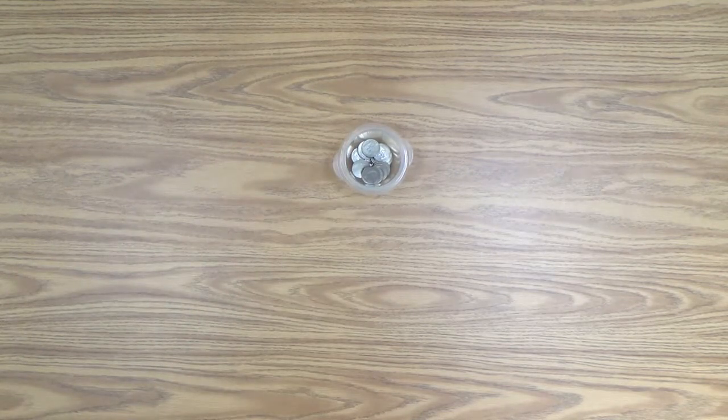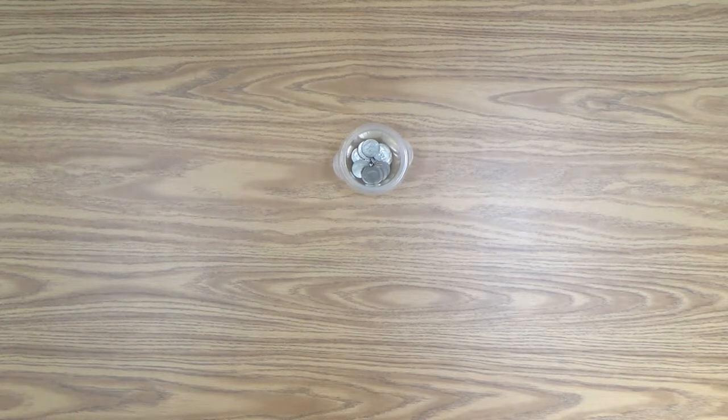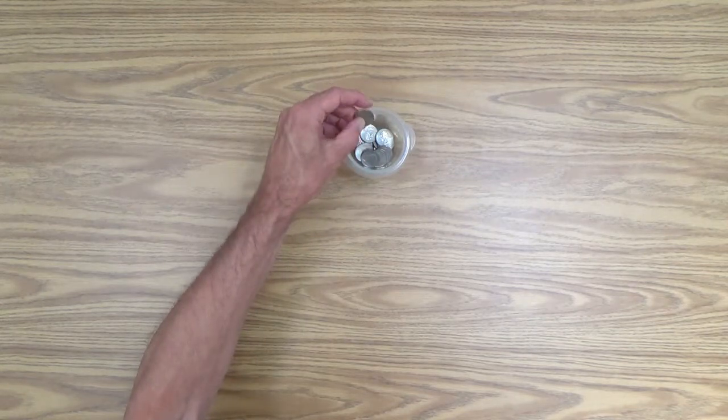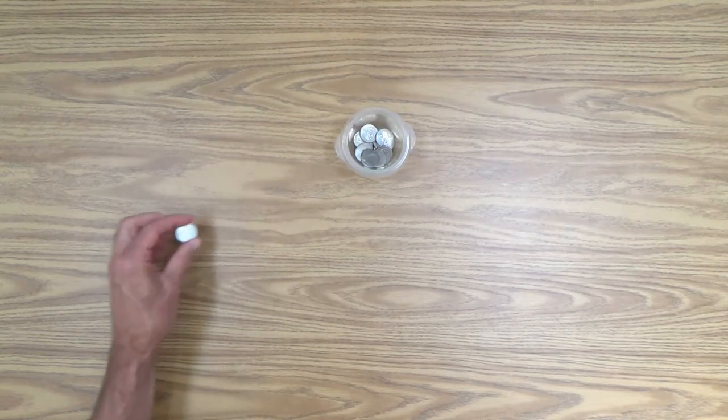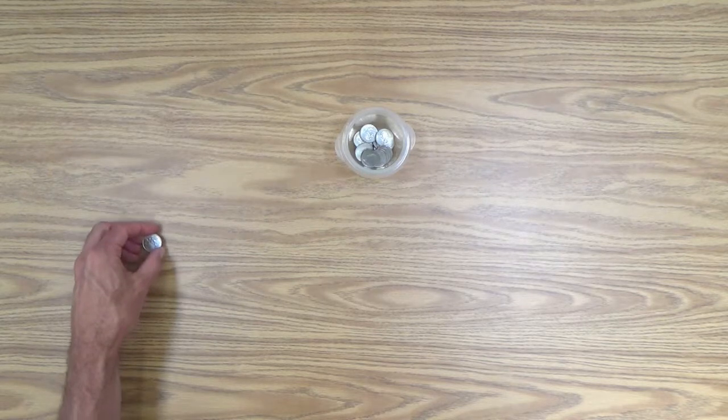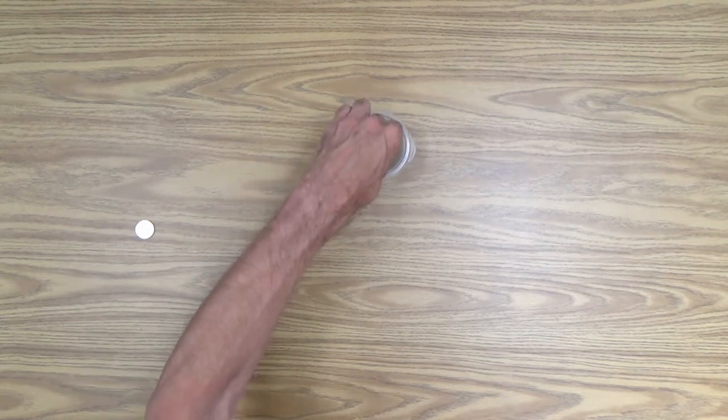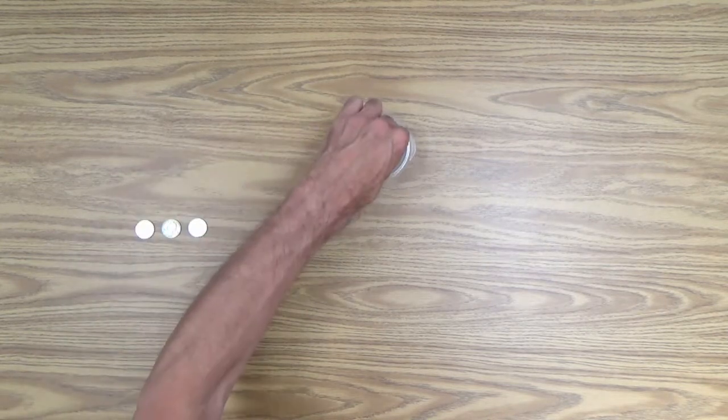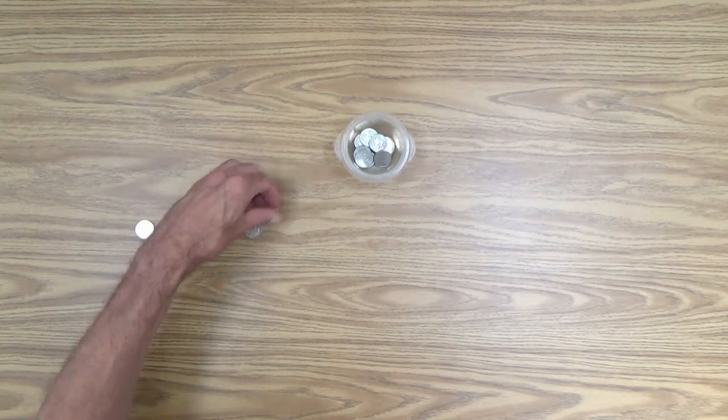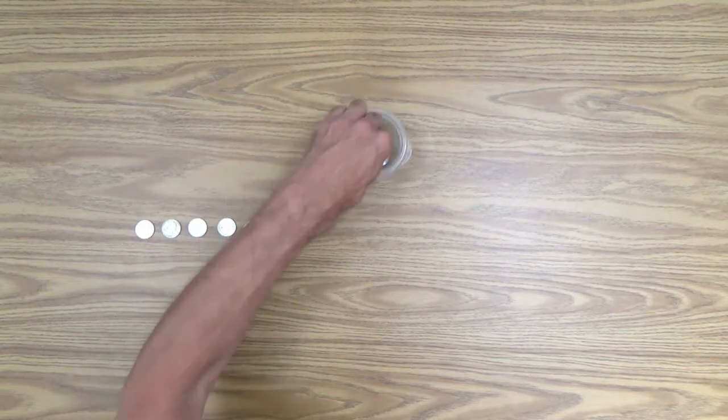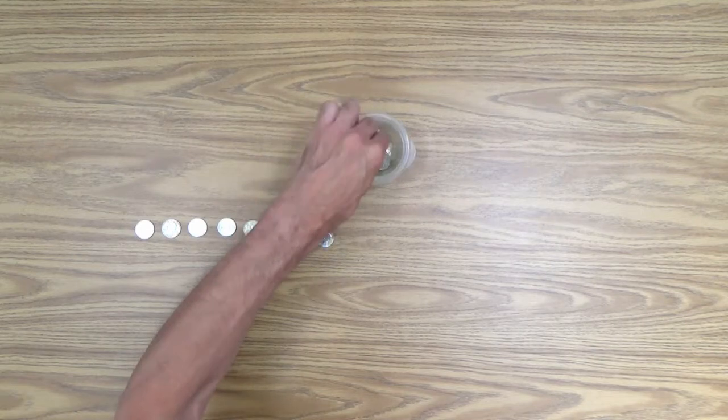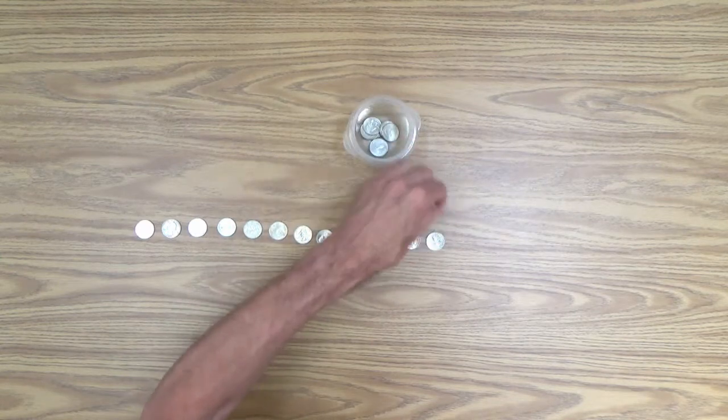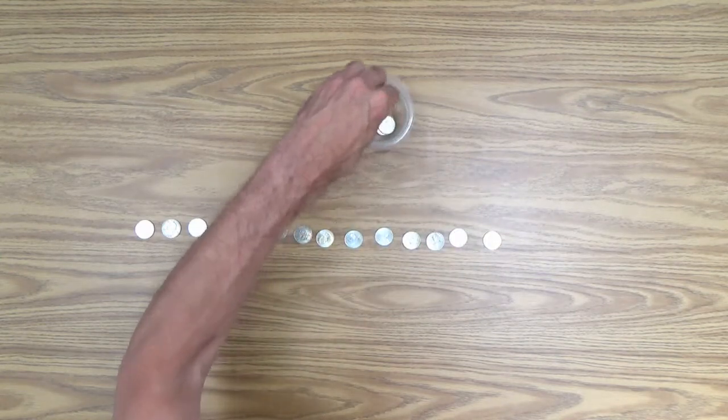The first thing you can do is you can have your child place and say. In other words, he's going to take one quarter out of the bank at a time, put it down and say one, two, three. And of course, he's going to keep doing this all the way up. I'm trying to do this as fast as I can here, all the way up to the 20 quarters you pre-counted.